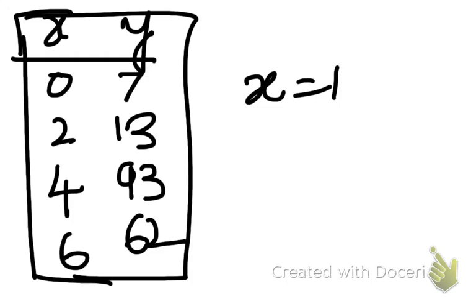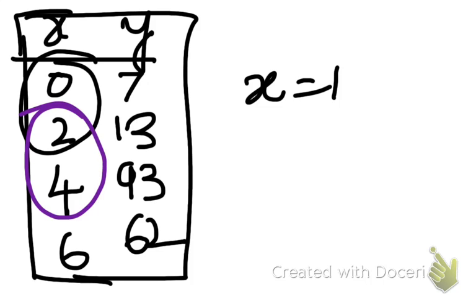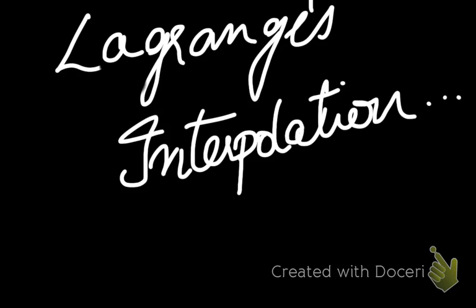But what do we do when these differences, these x differences, are not equal? Here you can see that the difference between these two is 2, and these two is 2, and these two is also 2. What to do when these differences are unequal? That is when we use the Lagrange's interpolation formula.